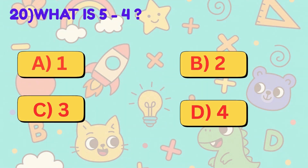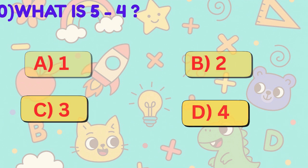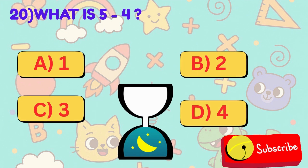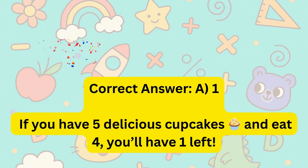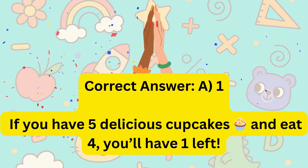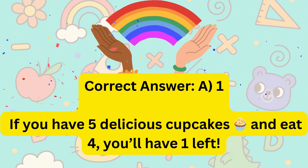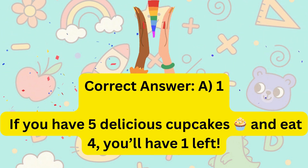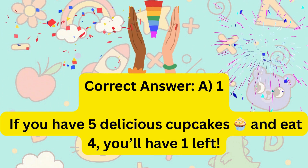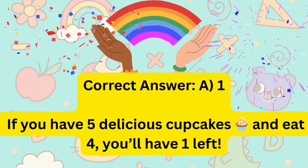20. What is 5 minus 4? Is it A, 1, B, 2, C, 3, or D, 4? Correct answer is A, 1. If you have 5 delicious cupcakes and eat 4, you'll have 1 left.